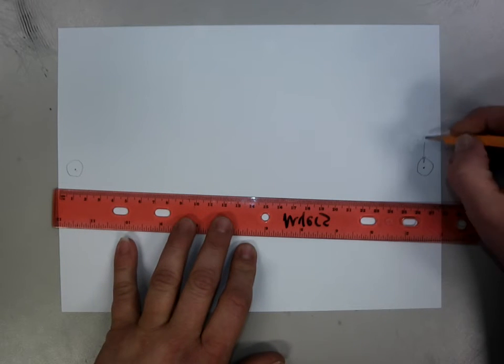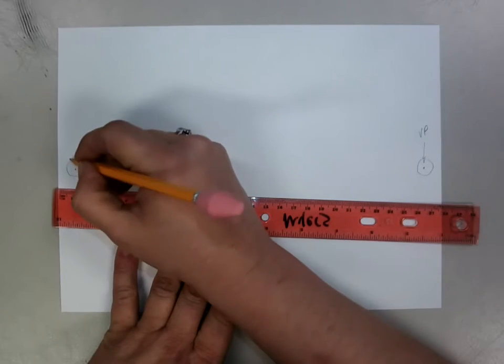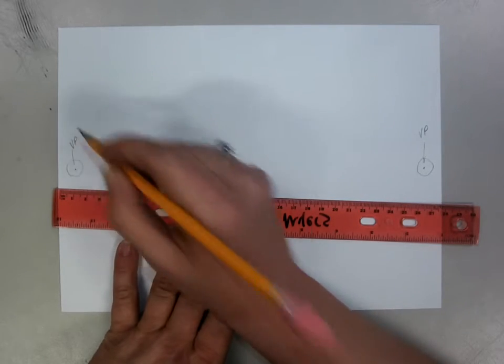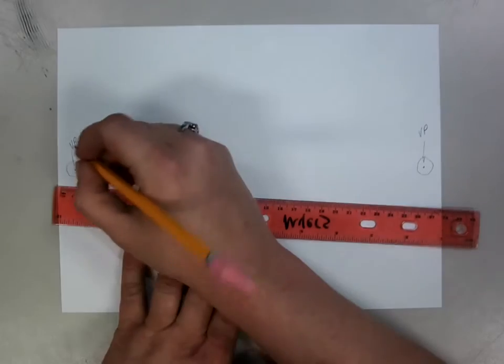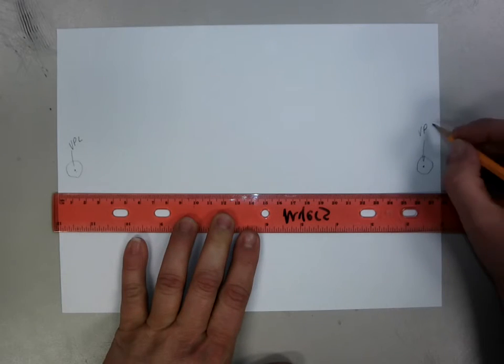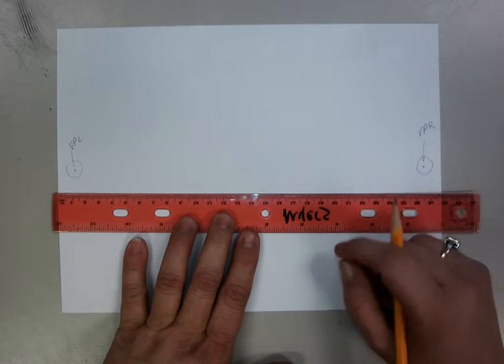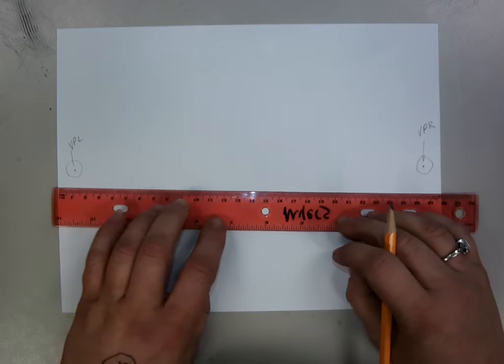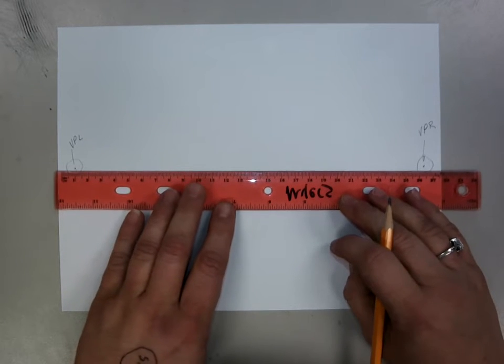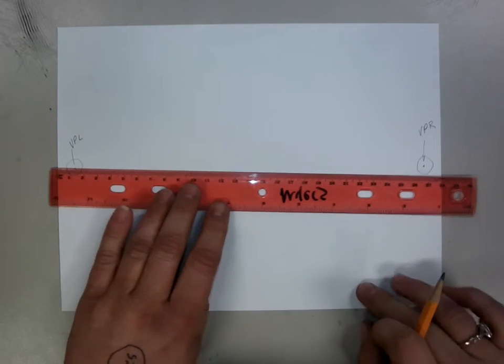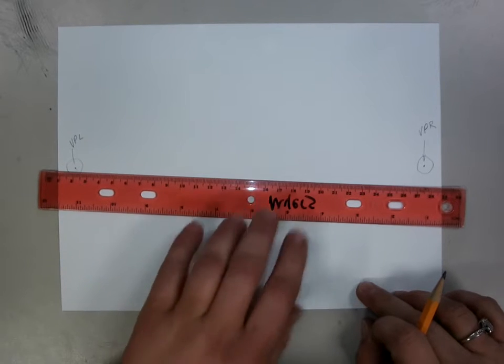I'm even going to label it for you. Some people will call this the VP left and this one the VP right, just in case we need that. We're doing two point perspective which means that you're looking at the corner of a building or a house or a box.